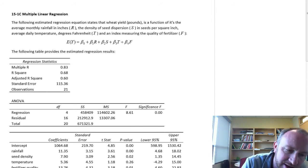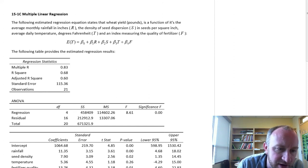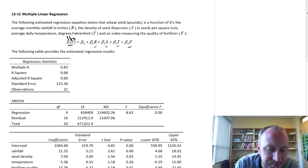So we have here our expected value of our wheat yield, which is measured in pounds, is a function of rainfall, seed dispersion or seed density, temperature, and the fertilizer.